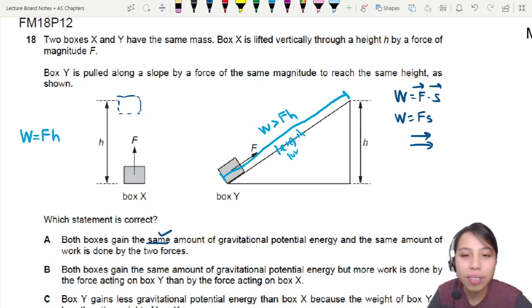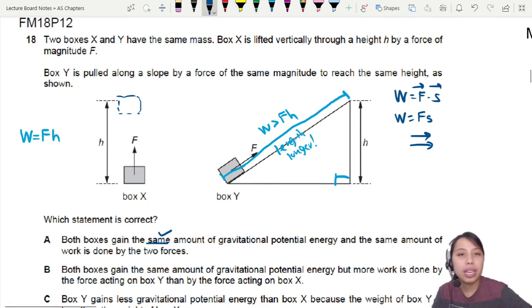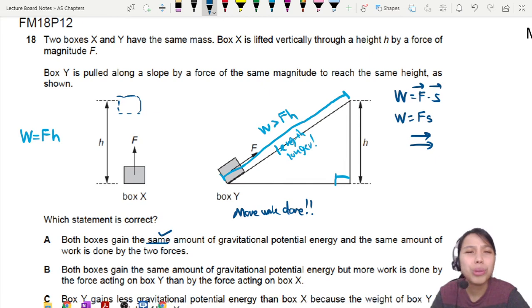So this one work done will be more than just traveling height H because this length is longer. It's a hypotenuse. Right angle triangle, you know, it's longer. So no, the work done is not the same. There is more work done by box Y. You do more work.